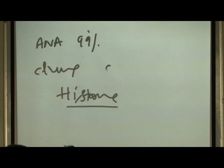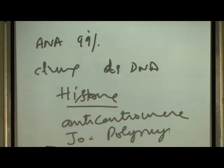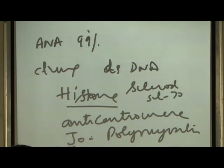Anti-double-stranded DNA antibody is most specific for SLE. In CREST syndrome we get anti-centromere antibody. Anti-Jo antibody is there in polymyositis. SCL-70 antibodies are seen in scleroderma.